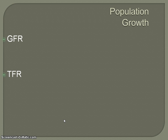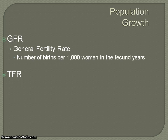Each of these measures are relatively similar in terms of what they are going to measure. Both of them are going to be looking at the number of children that women are having, but they're just slightly different in the way that they're calculated. The first is the number of births per 1,000 women in the fecund years — the ages 15 to 45.